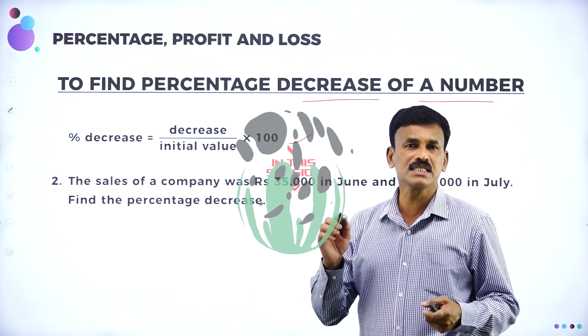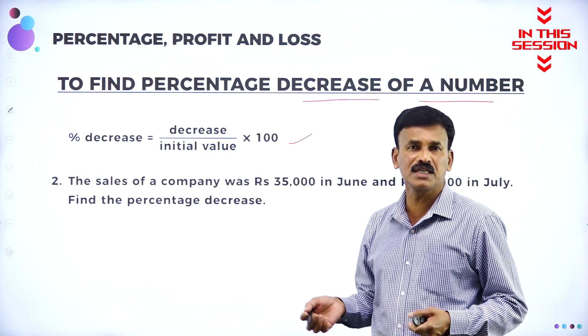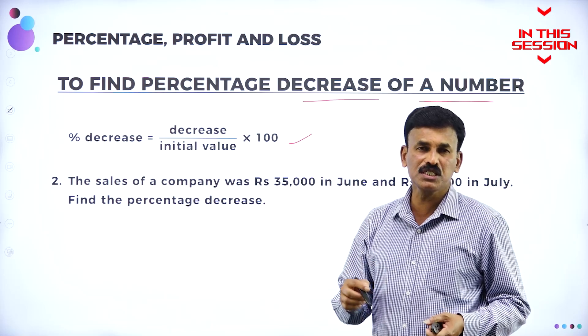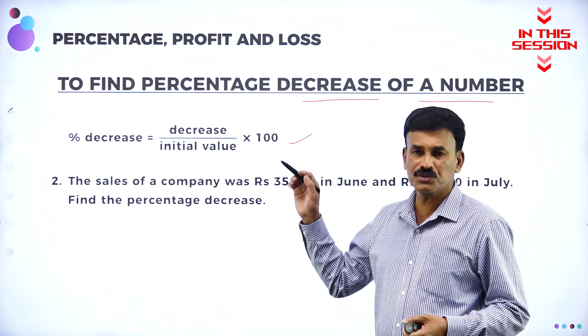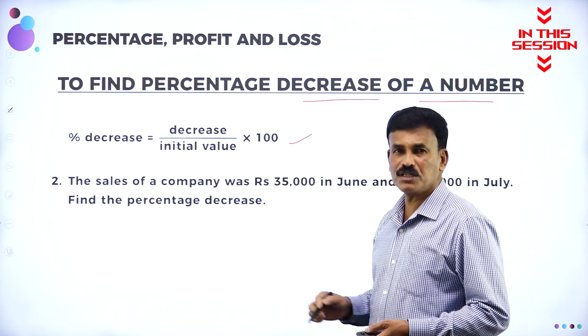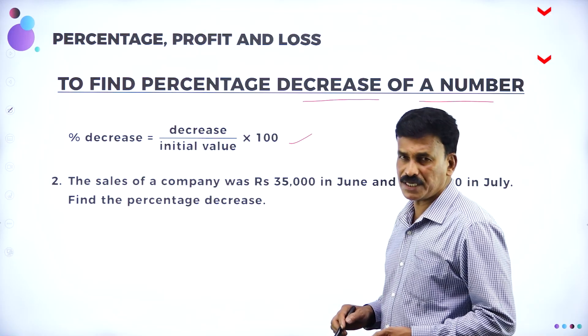For percentage increase, it is increase divided by the initial value into 100. For percentage decrease, percent is equal to decrease amount divided by the initial value into 100.